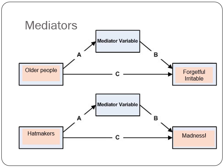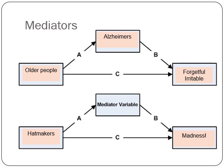You might think older people are forgetful and irritable just because of age, but in fact what's happening may be a condition like Alzheimer's or dementia, which is responsible for the forgetfulness rather than the age itself. And with hat makers becoming mad — you might say don't become a hat maker or you'll go crazy, but in fact it's the mercury they worked with to make the hats that contributed to the madness.